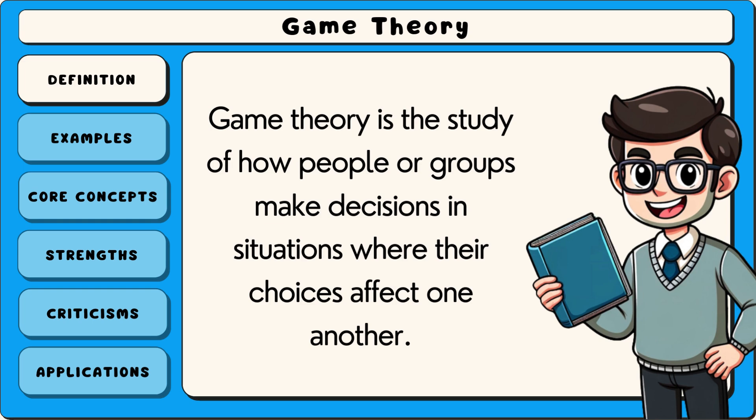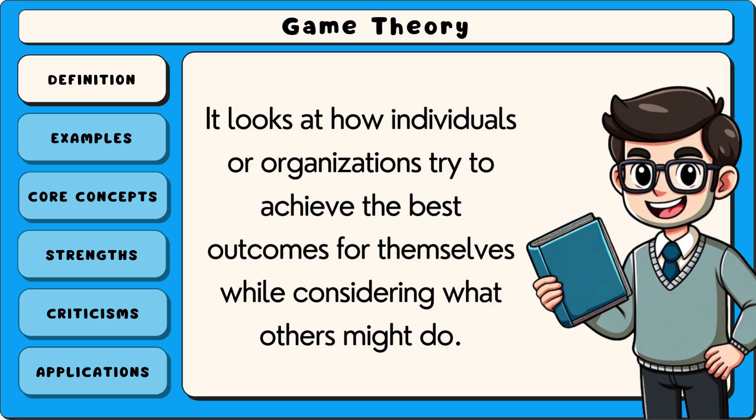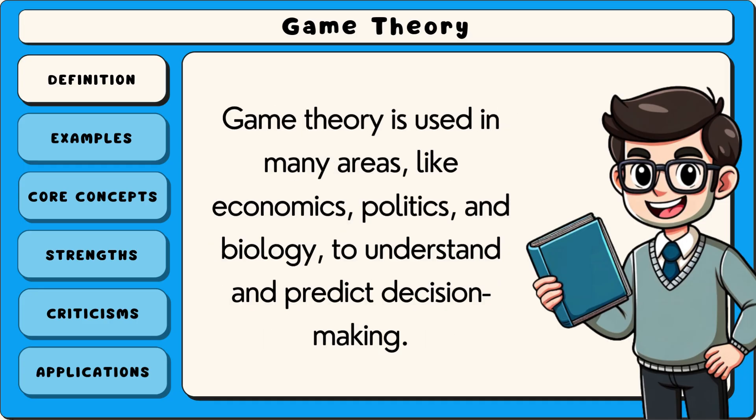Game theory is the study of how people or groups make decisions in situations where their choices affect one another. It looks at how individuals or organisations try to achieve the best outcomes for themselves while considering what others might do. Game theory is used in many areas like economics, politics and biology to understand and predict decision making.